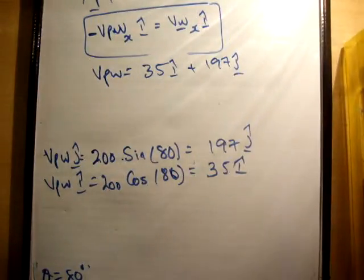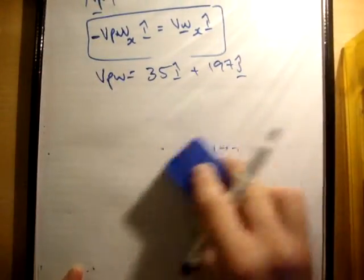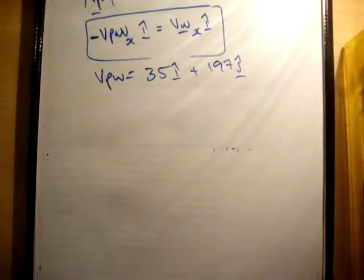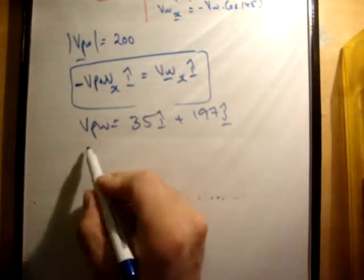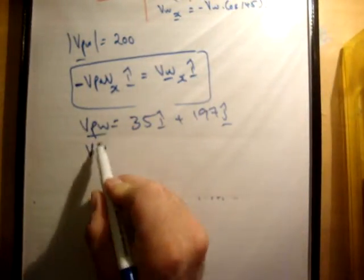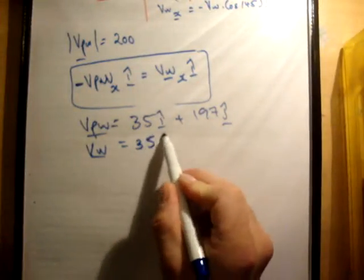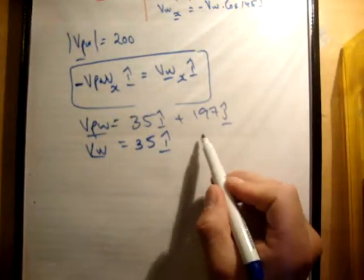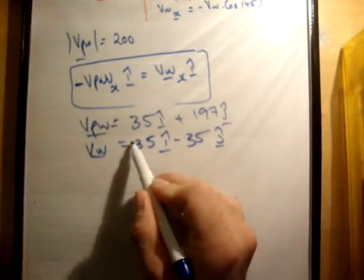How does that help us? So that helps us greatly, because we know what the vector VW is equal to. So VW is equal to 50 times the cos of 45 i hat, so 50 divided by root 2, so we're going to get, let's say 35 i hat and 35 j hat, and of course they're both negative.